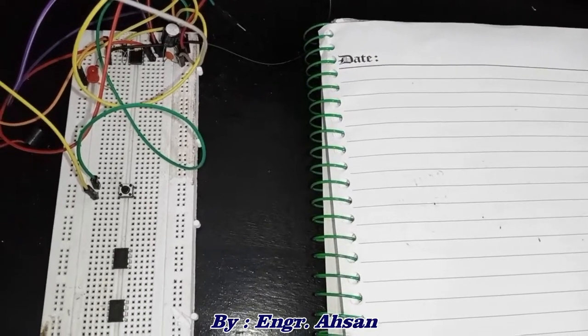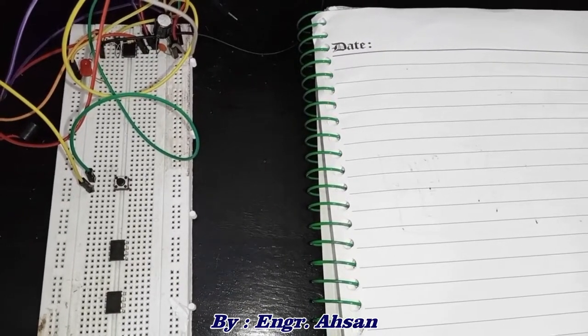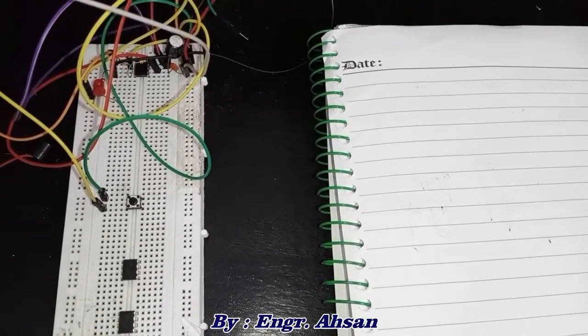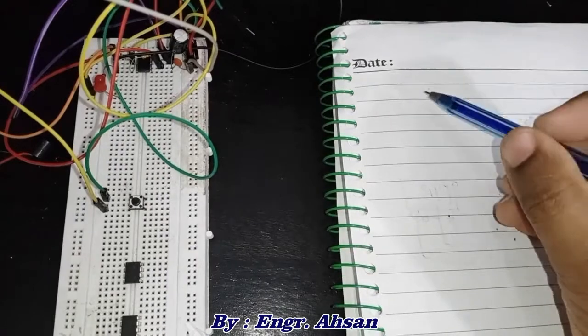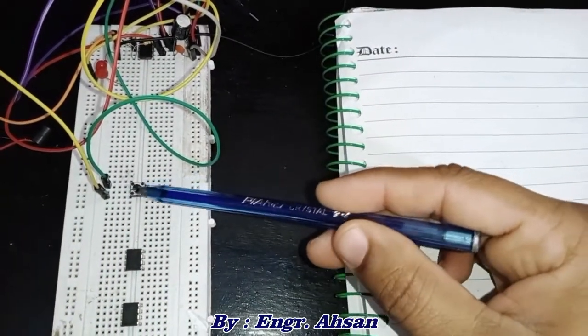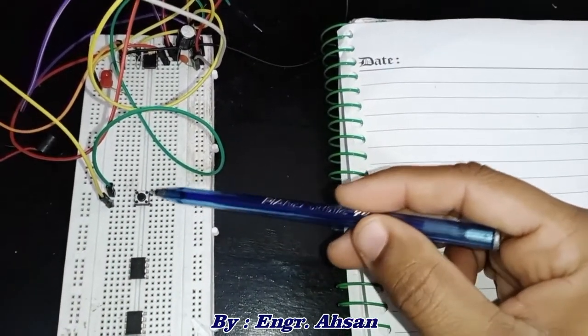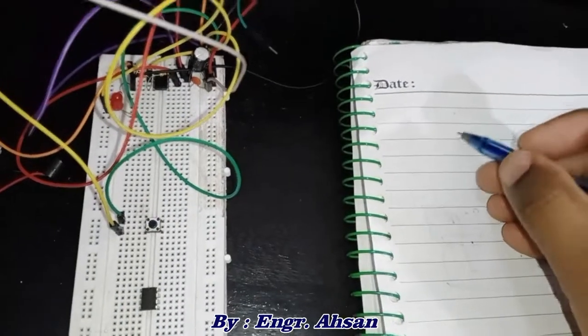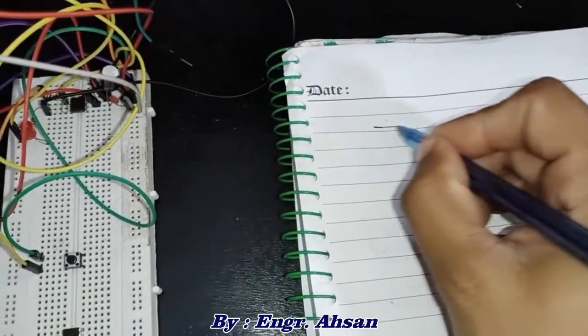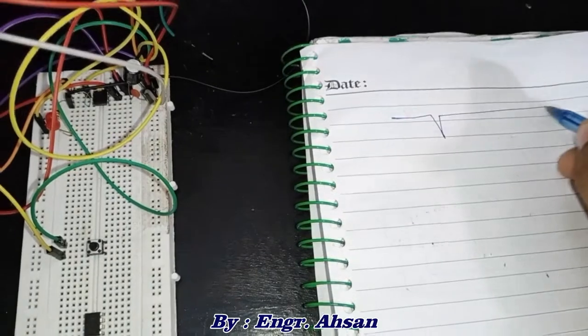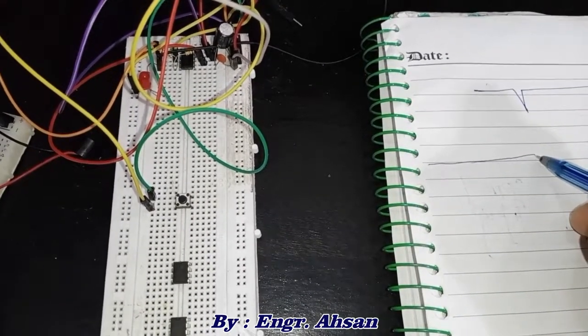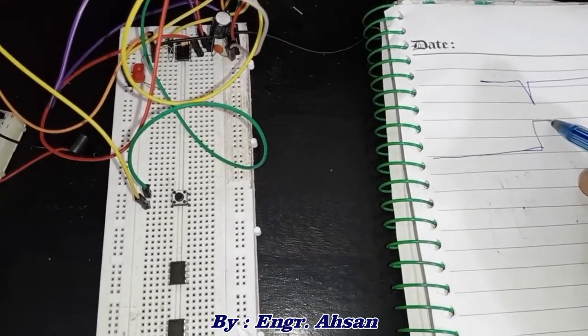This video is about the 555 timer IC in monostable mode. In monostable mode, we have control through a trigger pulse that you can give using this push button, and this LED shows the output. If you give a negatively triggered pulse like this to your circuit by pressing this button, your output that was low becomes high.